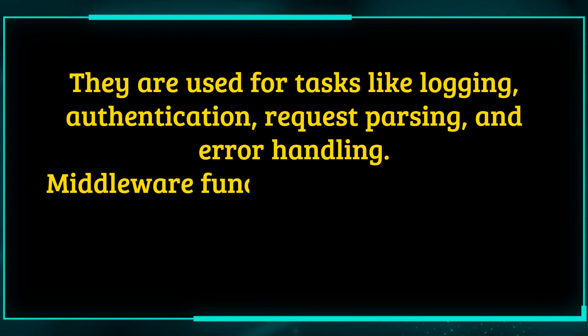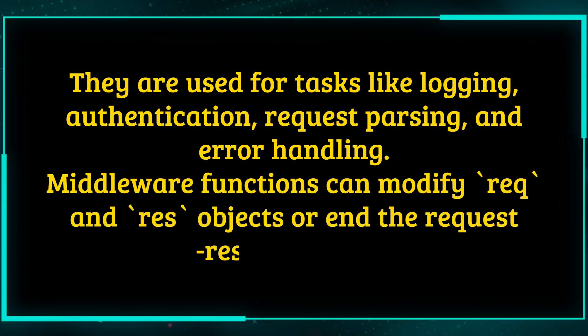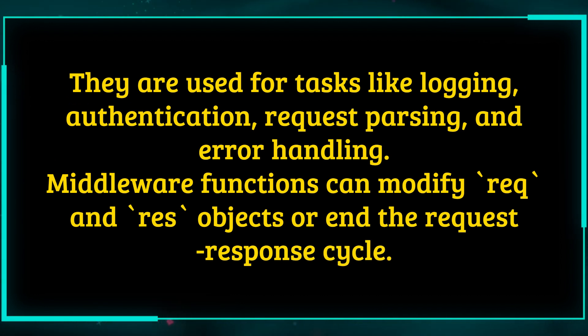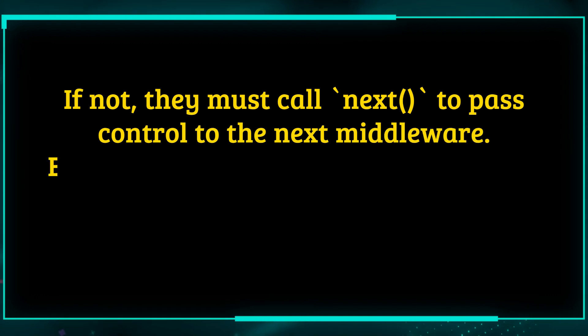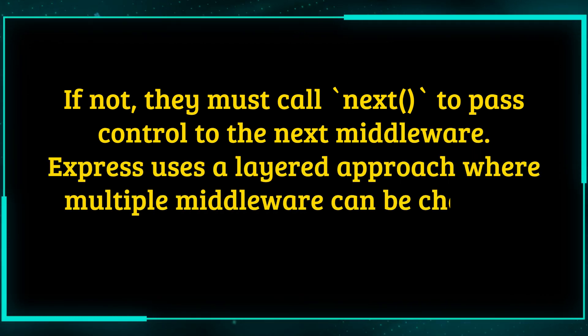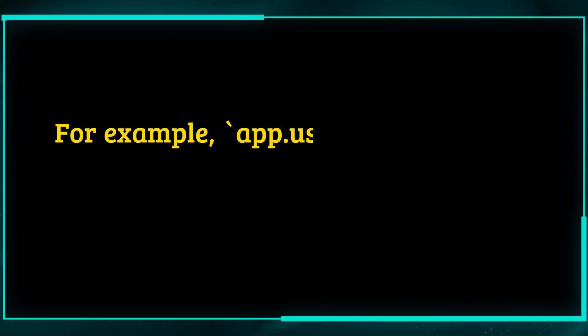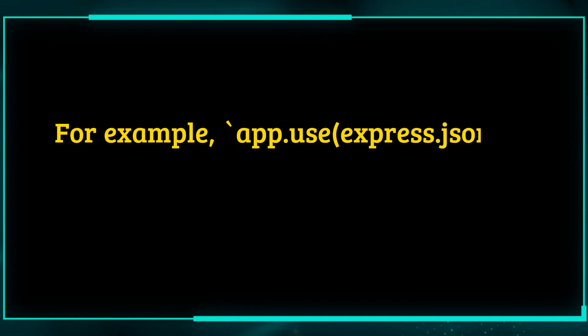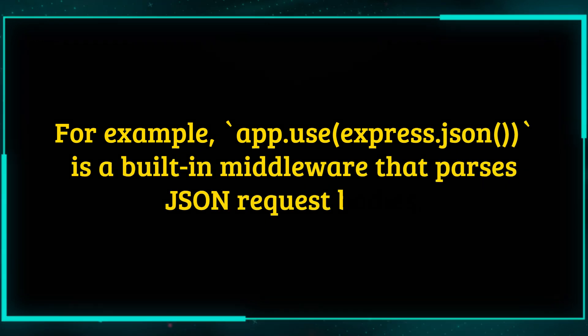Middleware functions can modify req and res objects or end the request-response cycle. If not, they must call next() to pass control to the next middleware. Express uses a layered approach where multiple middleware can be chained, offering flexibility and modularity. For example, app.use(express.json()) is a built-in middleware that parses JSON request bodies.